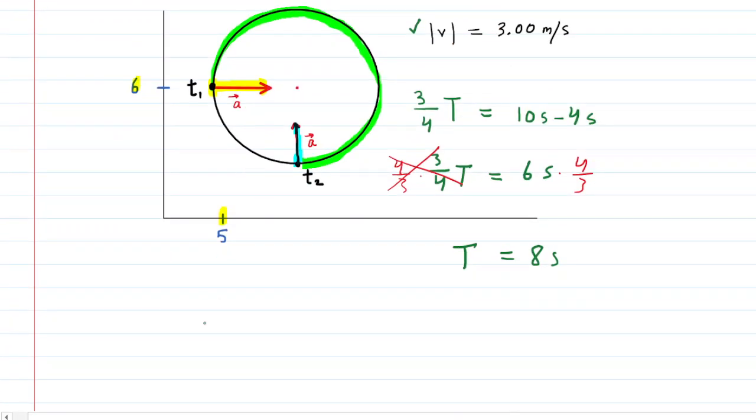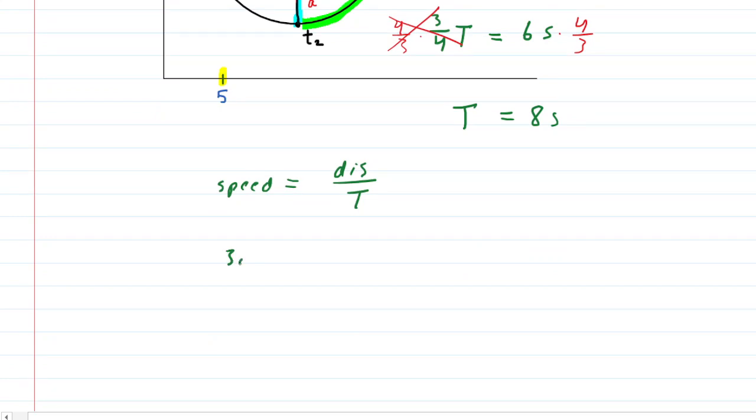Well, why does this help us? Well, we know that the speed of an object in just general terms is equal to a distance divided by a time. We just said that the speed was three meters per second. Now the distance to go all the way around a circle would be the circumference. And that, of course, is equal to two pi times the radius of the circle. And then the time we've already figured out was the eight seconds to go all the way around the circular path.